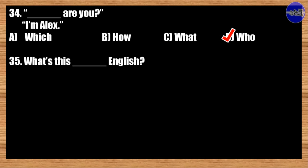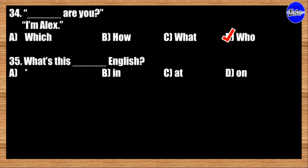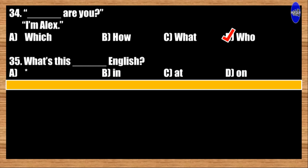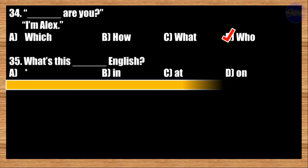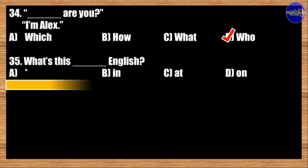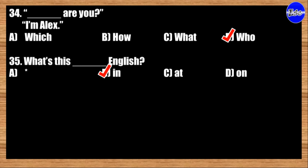Number thirty-five: What's this? Blank English. A: blank; B: in; C: at; D: on. The best answer is option B. What's this in English?